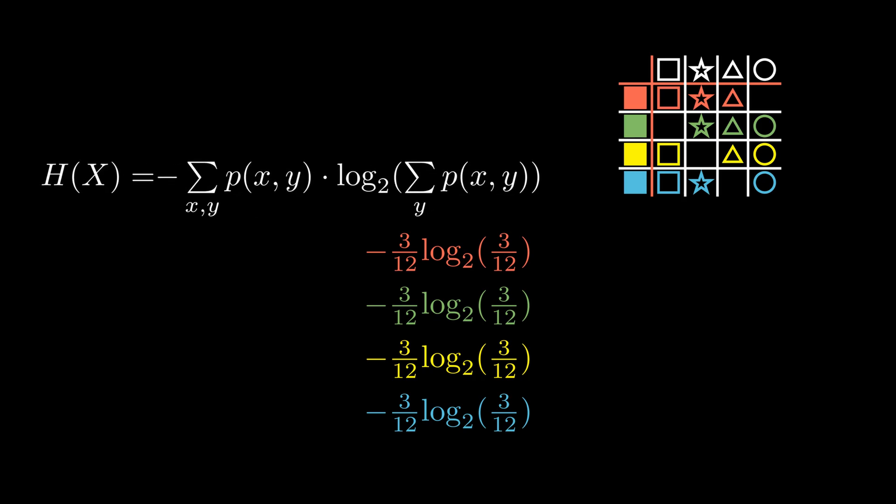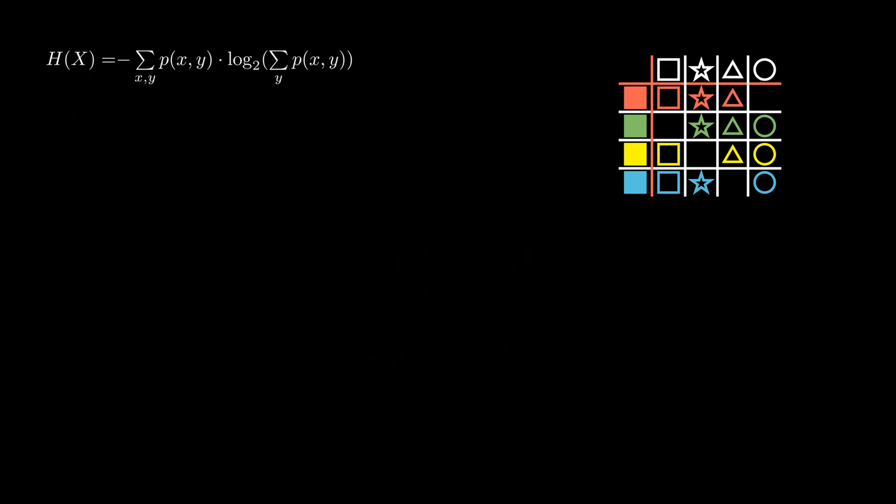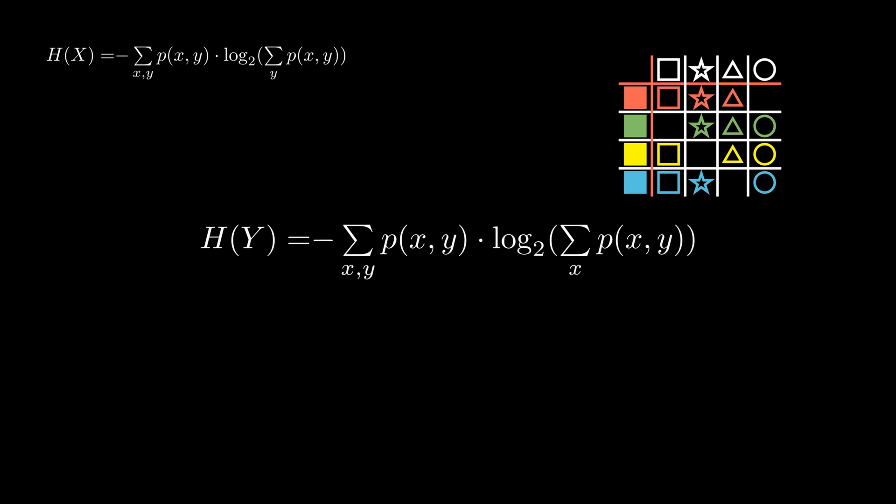Except now we just know that there are two possible events. We can do the same thing if you want to calculate the entropy of picking a specific shape.